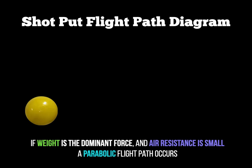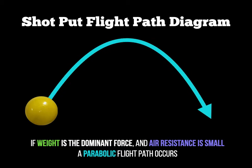The flight path diagram is relatively simple. Draw the shot put again and draw a curved line to show the flight path, with an arrow at the end indicating the direction of travel. Since weight is the dominant force and air resistance is reduced, it is a parabolic flight path as we covered in the last screencast. Draw a nice curved parabolic line with an arrow at the end. You could also draw a direction of travel line underneath to show the shot put is travelling to the right.